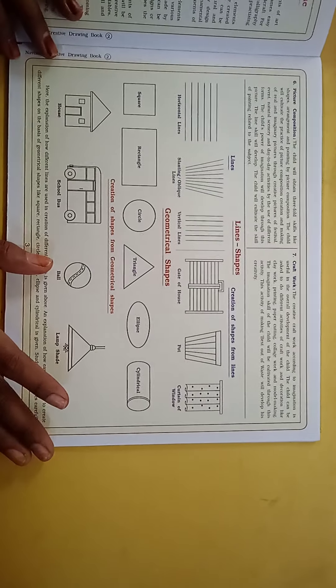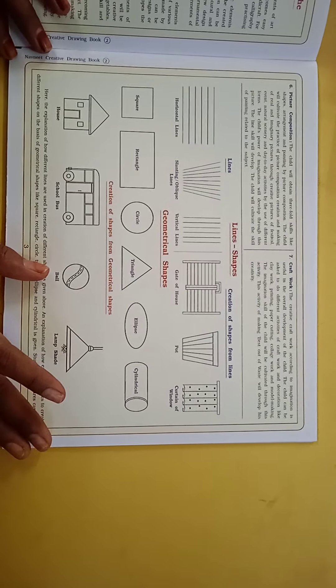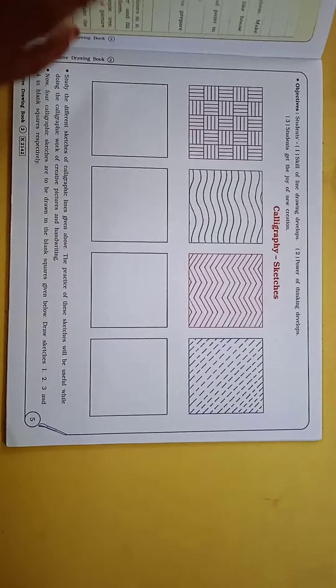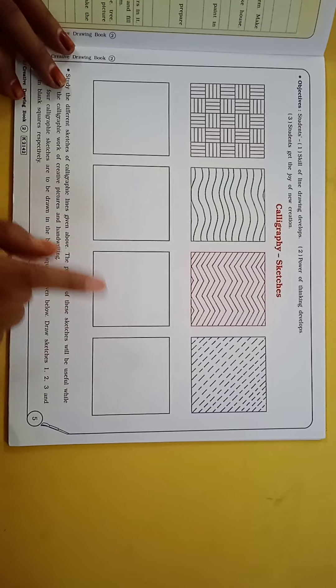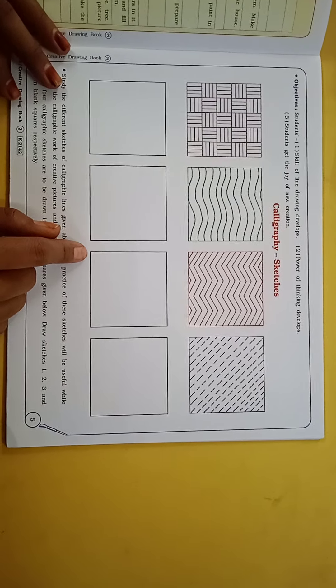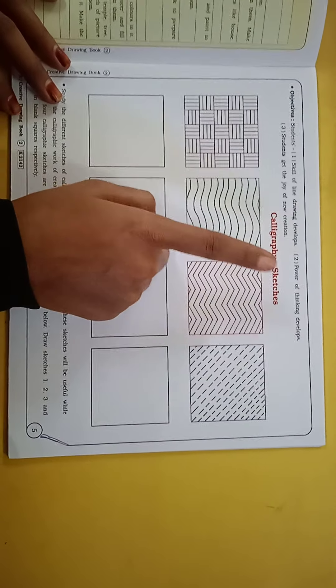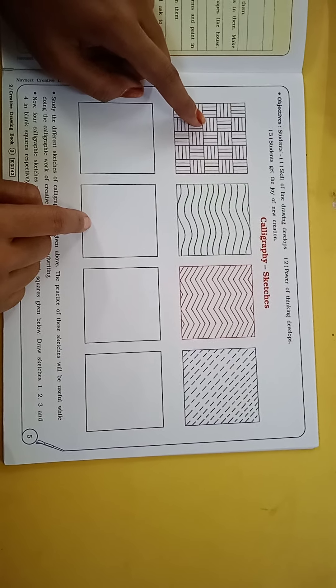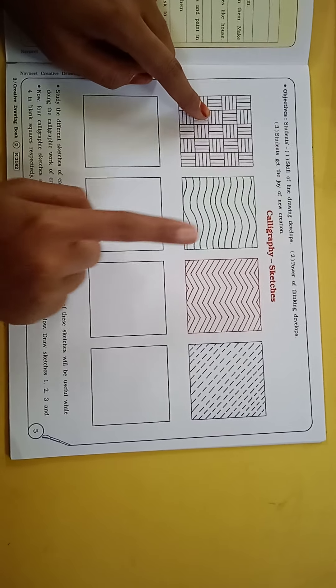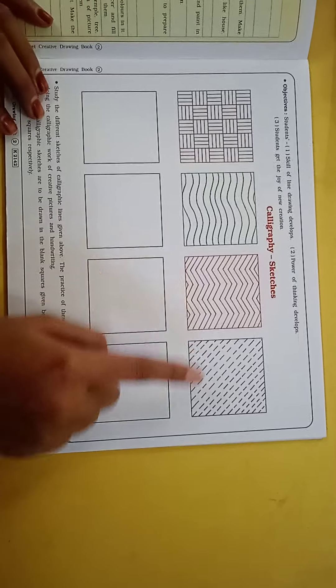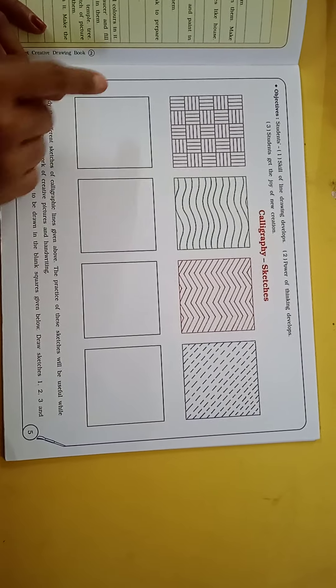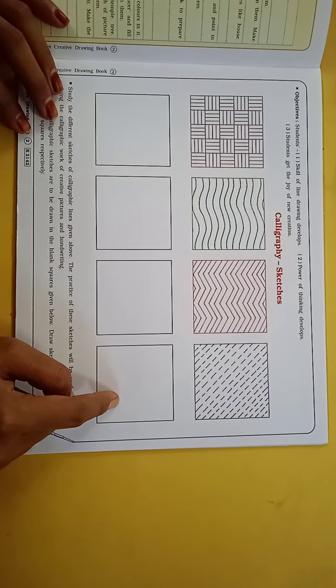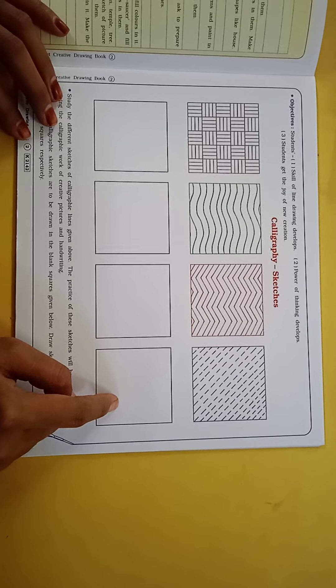we have seen the lines in the first period and we have drawn all the lines in our workbook. We have these lines: our standing line, sleeping line, curve line, zigzag line, and dotted line. We have copied these boxes in our workbook. I hope you have finished this work.